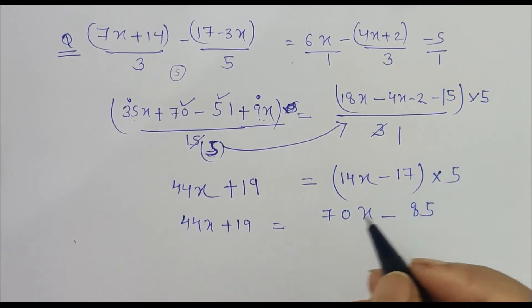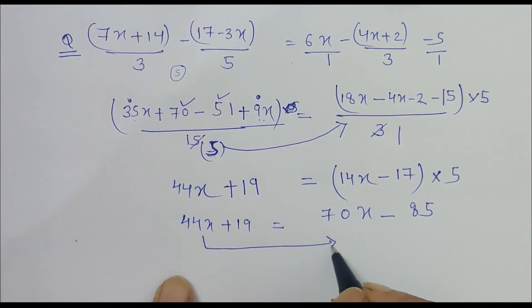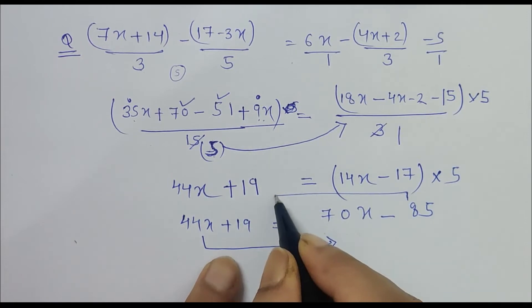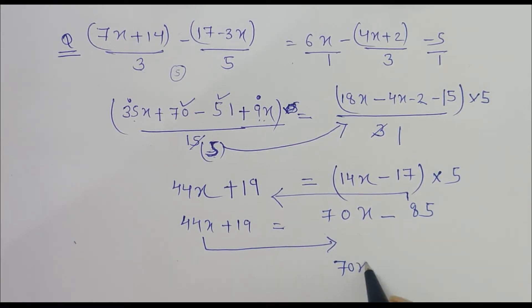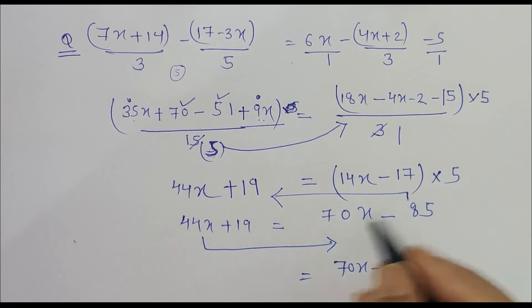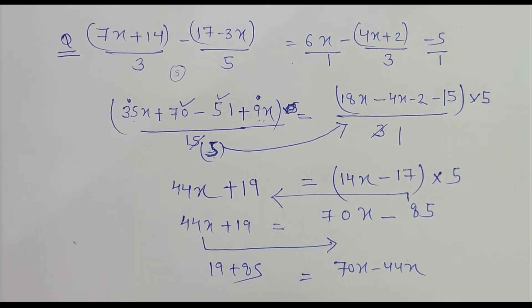Now again, shift the right-hand side terms. When 44x is shifted to this side and 85 is shifted to the other side, what we get is 70x minus 44x and 19 plus 85. Here what is the difference of 70 and 44? 10 minus 4 is 6, 6 minus 4 is 2, so 26x.